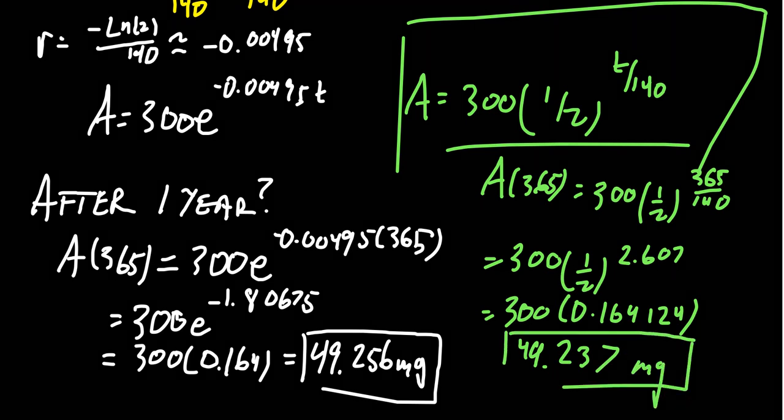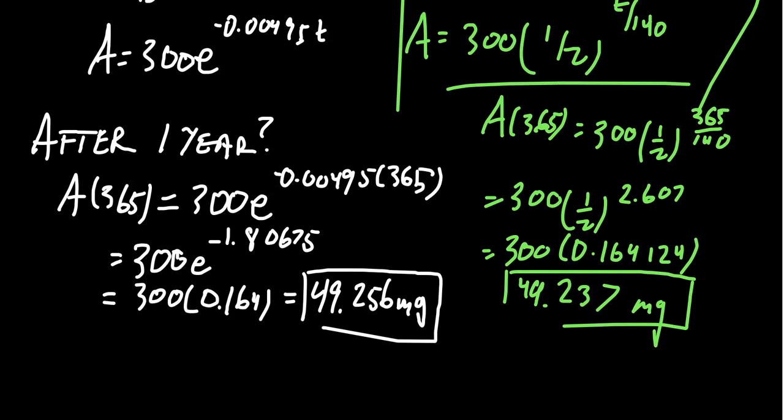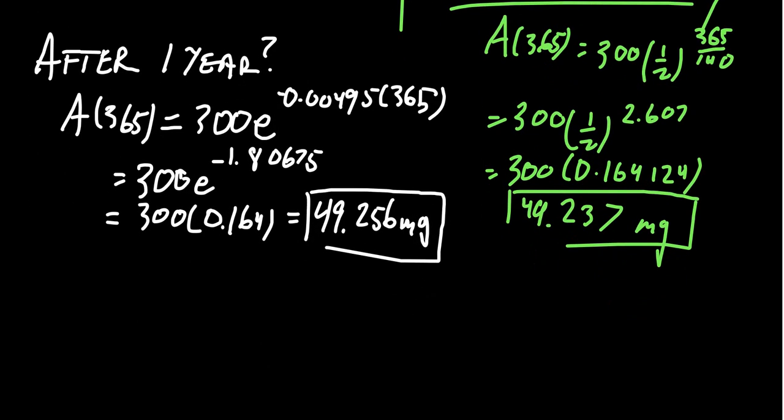You'll notice if you look, if you round to three decimal places, these are the same number. You end up with 49.237 milligrams. It's a little bit off. Honestly, in a scientific setting like a chemistry lab, you're probably working with significant digits. So we could predict how much material we have after a certain time allotment.